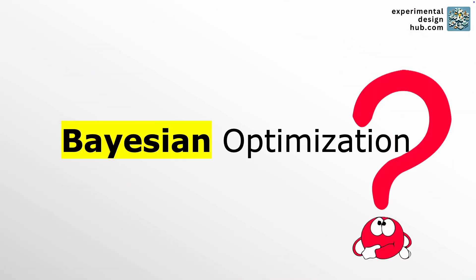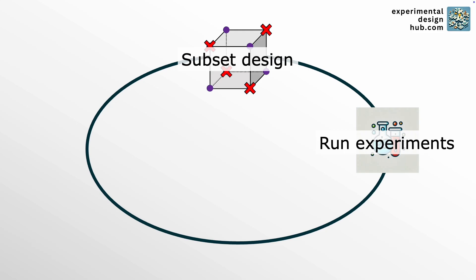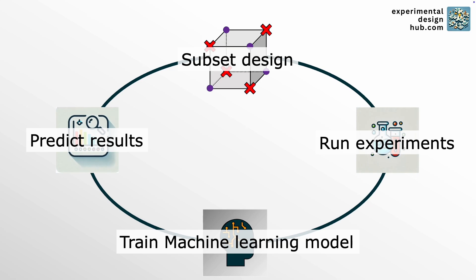So what is Bayesian optimization? It's an iterative process coupled with machine learning. Here's how it works. First, from the list of all the possible experiments, you select a small subset — either randomly or through other sampling methods. Then you perform those experiments and get the results. Afterwards, you use those initial results to train a machine learning model that now tries to predict the results for the whole design space.